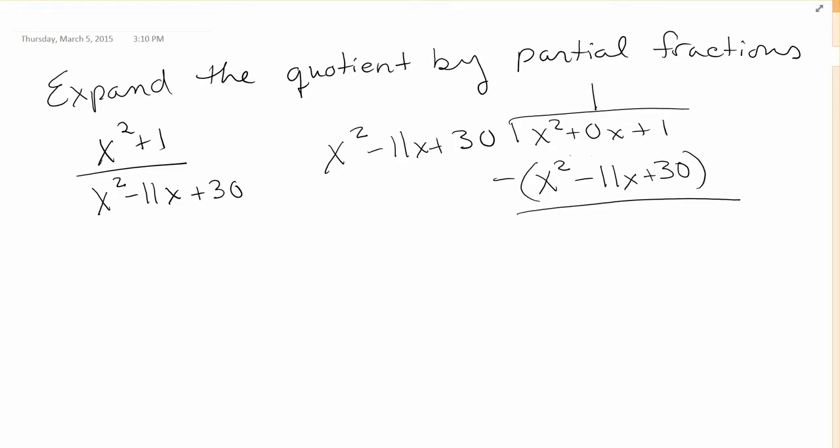And so this is going to be x squared minus x squared, which is 0. 0x minus negative 11x makes positive 11x. 1 minus 30 makes negative 29. So that means you can write this fraction x squared plus 1 over x squared minus 11x plus 30 as the quotient, which is 1, plus the remainder 11x minus 29 divided by the divisor, which is x squared minus 11x plus 30.